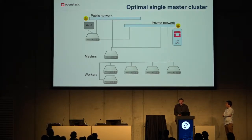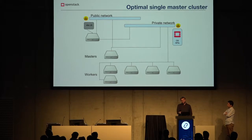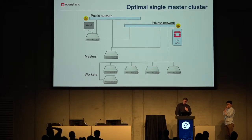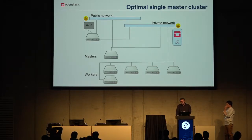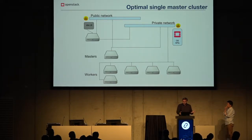The optimal configuration with a single master has compute worker nodes in a private isolated network. The master is also on the private network to achieve communication between workers and masters, and only the master node has a floating IP. When a user runs an application, they can create a Kubernetes service with type LoadBalancer — OpenStack will create a load balancer with Octavia, assign a floating IP, and create listeners in the private network, giving the most isolated option.